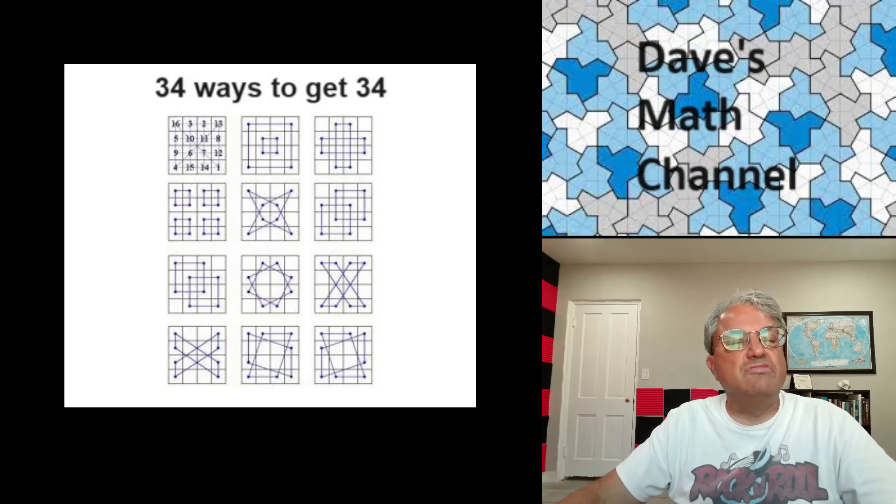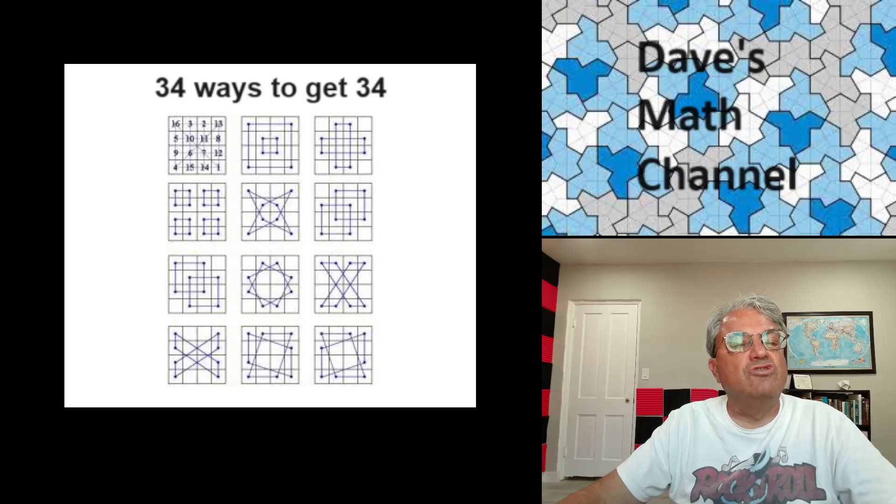But what makes it even more magic is that it actually has another 24 ways you can get 34. And they're all very interesting geometrically. I mean, look at this, the four corners add up to 34. If you look at the second picture, also the four squares in the middle add up to 34. And then these two rectangles, if you look at the third picture, you know, if you take a rectangle in the middle, either vertical or horizontal one, you get 34 that way.